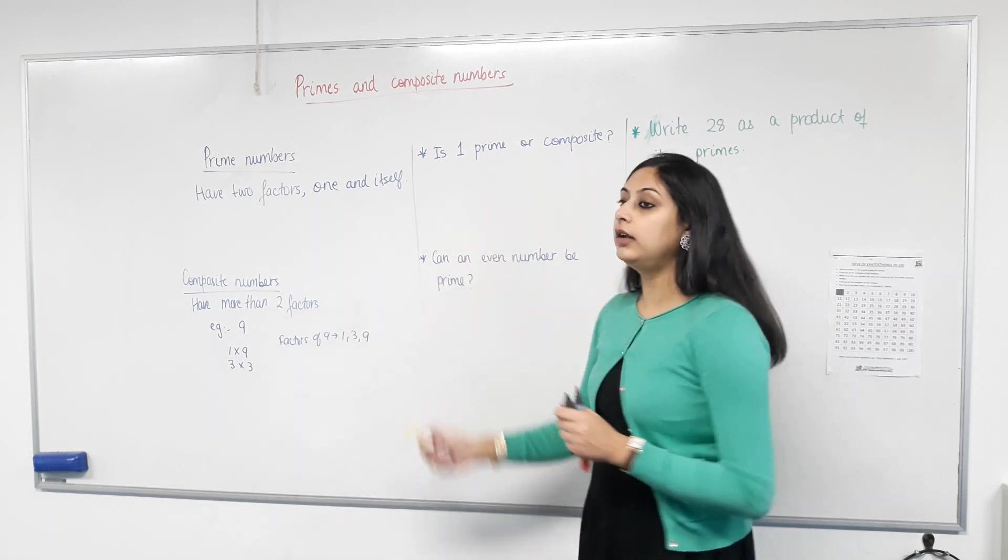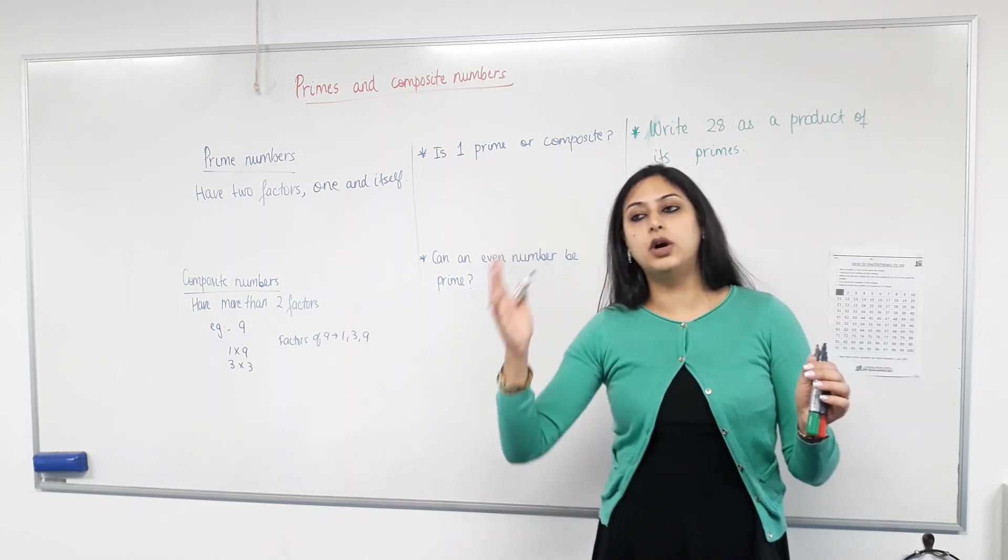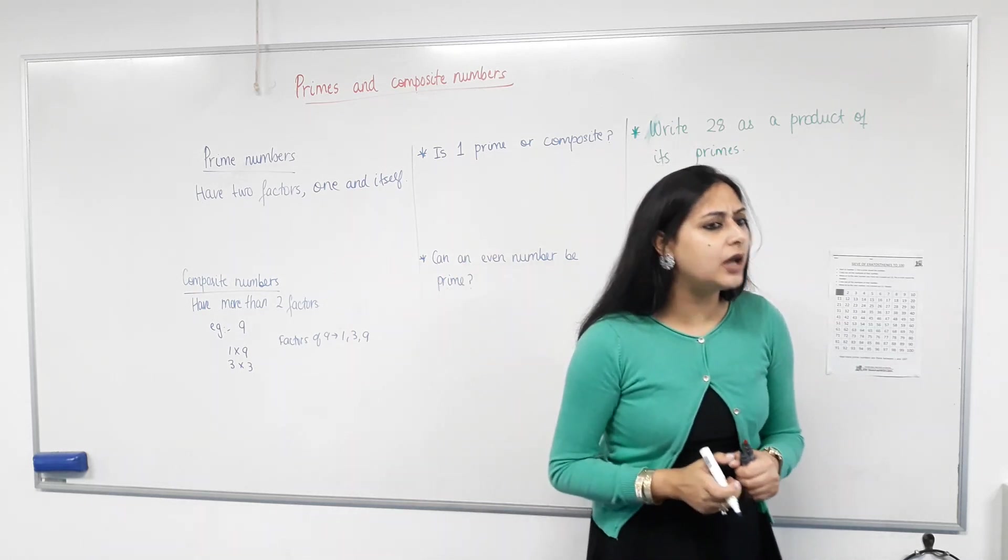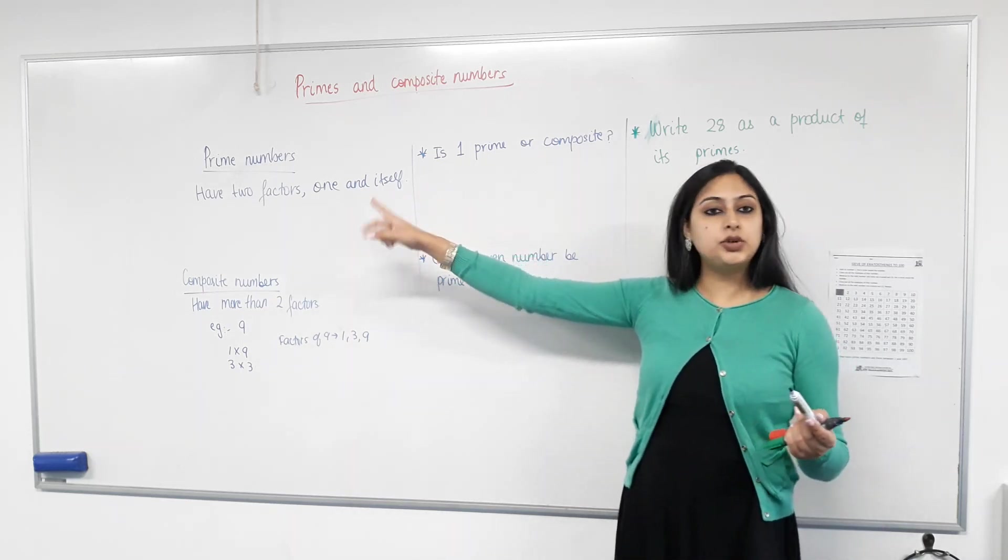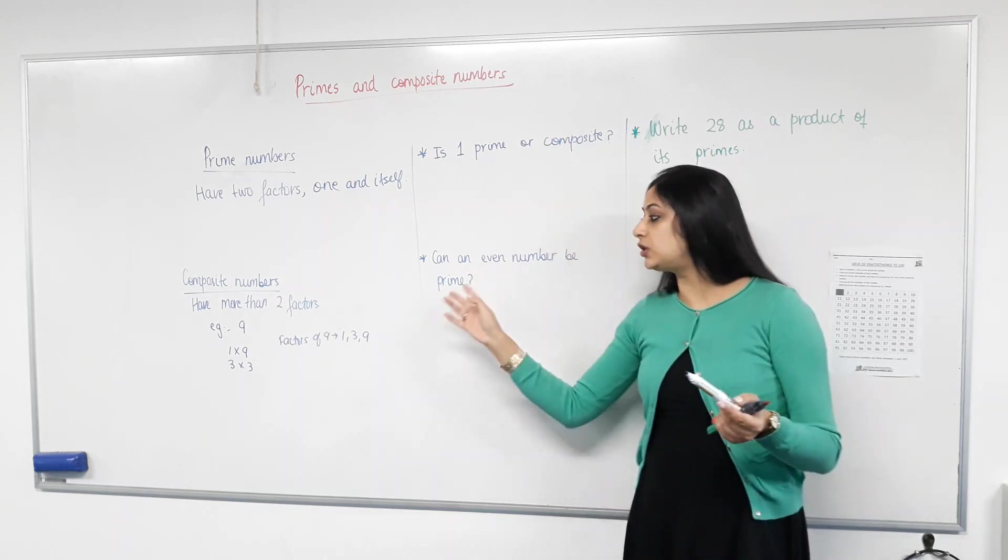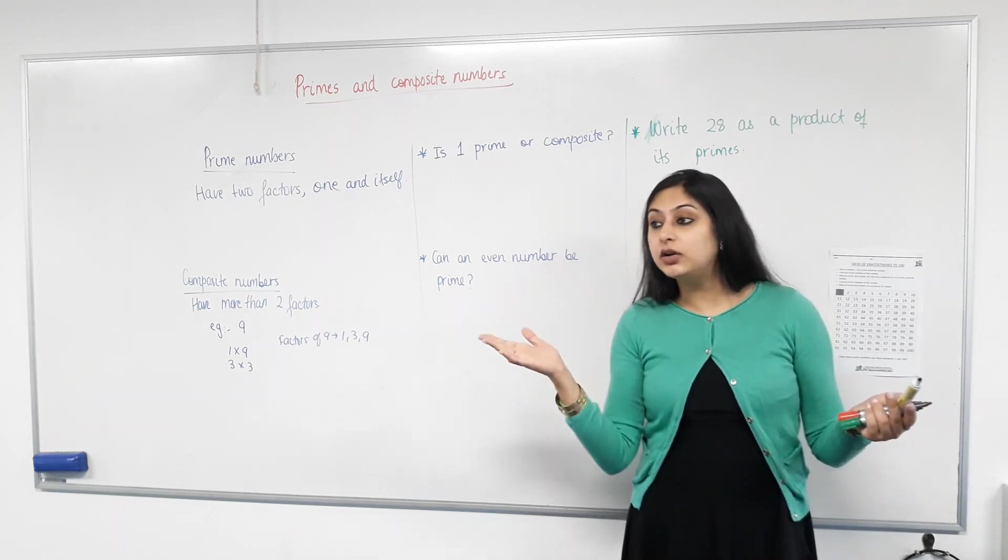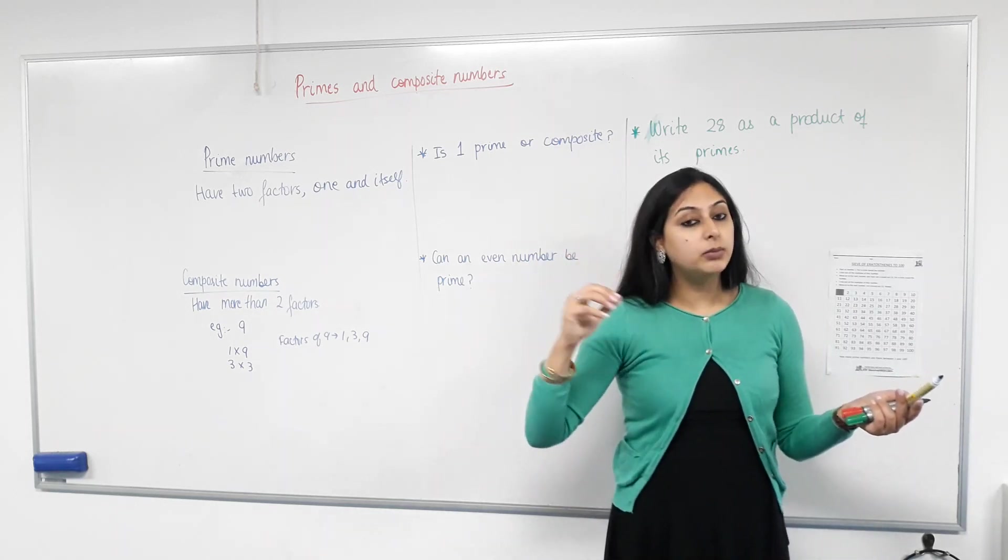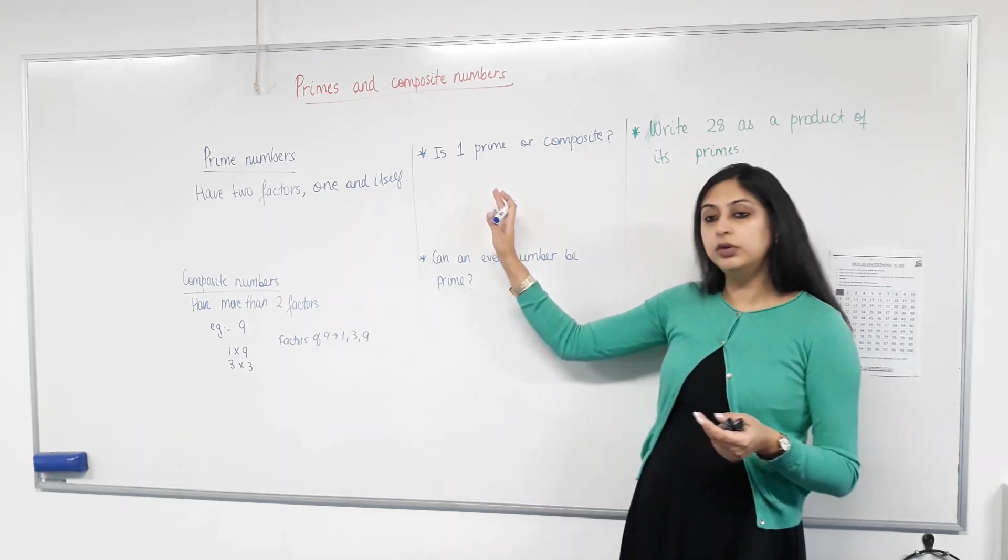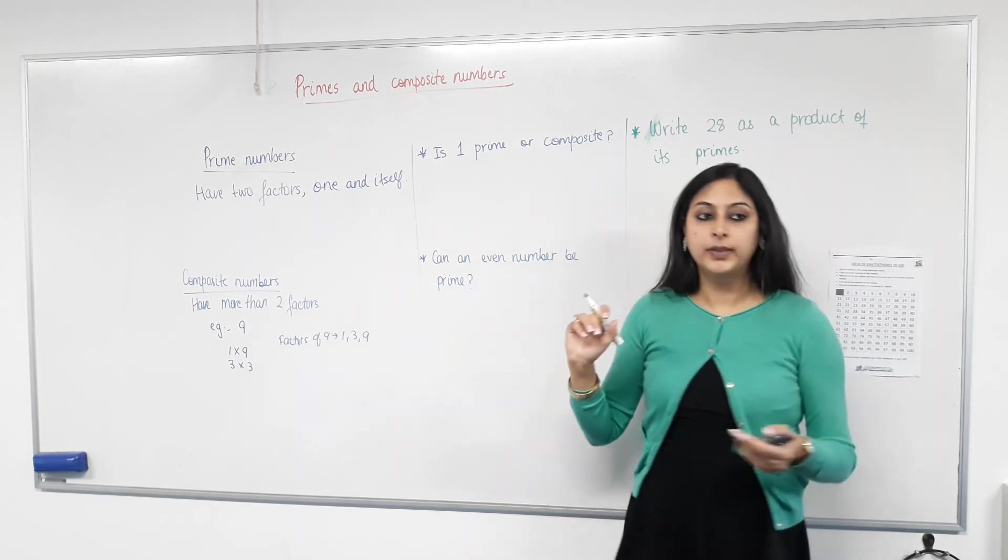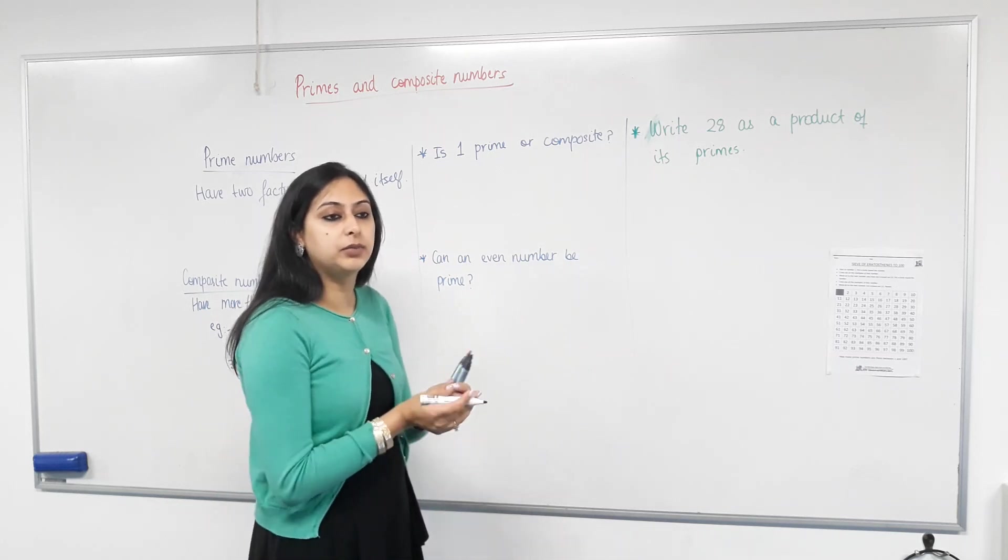Now, is one? Think carefully before you answer. Is one a prime number or is it a composite number? Neither. Well done. Why? How many factors does one have? One. So, prime numbers need to have exactly two factors. Composite numbers need to have more than two factors. How many factors does one have? One. So, it's neither composite nor prime. And that's a common misconception students have. They think two is a prime number and one is a composite number. That's incorrect. Are we clear now? Yes. And that's why these definitions are important. So, what is one? Neither. It's neither prime nor composite. It's just a special number. Just like me.